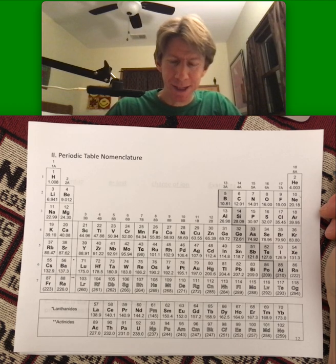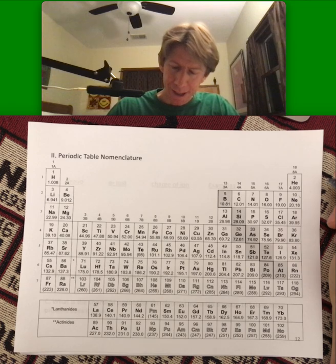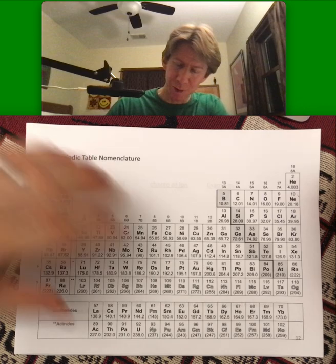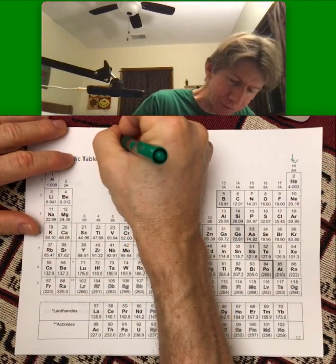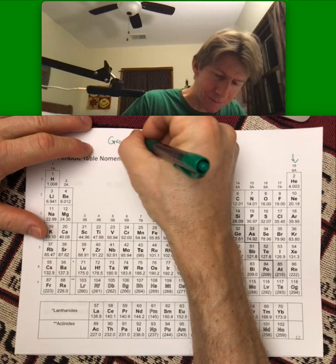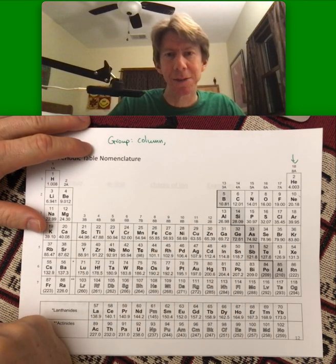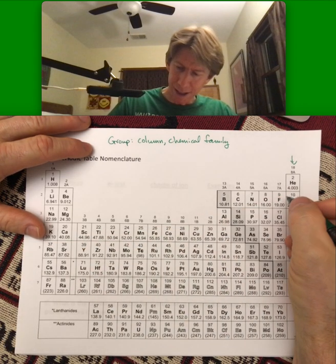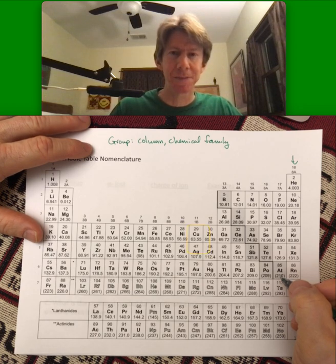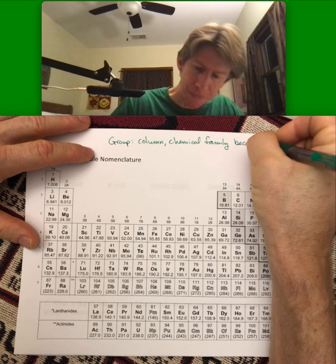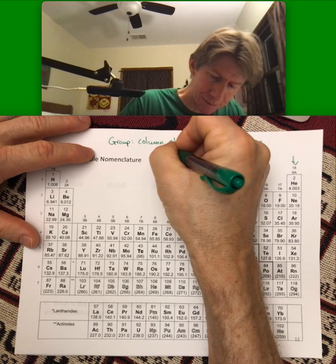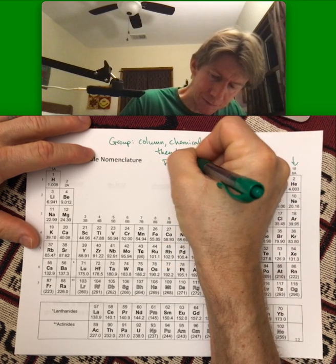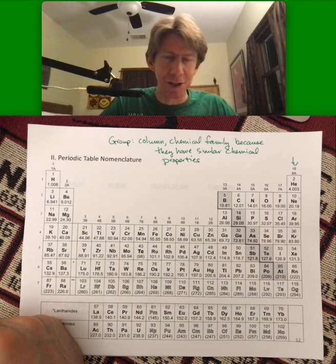Now we're going to go to periodic table nomenclature. There's a question on the homework about this and now we're going to name all of the parts of the periodic table. So a lot of the groups have names and let's first define a group. A group is a column on the periodic table and it is also called a chemical family, and that's because a column on the periodic table, they all have similar chemical properties. Chemical properties, remember, is a list of reactions that each substance does.